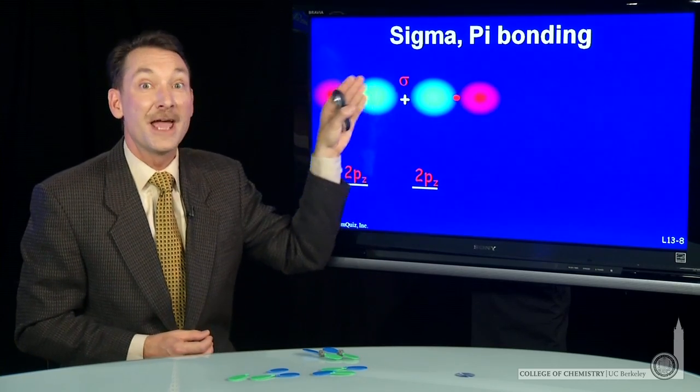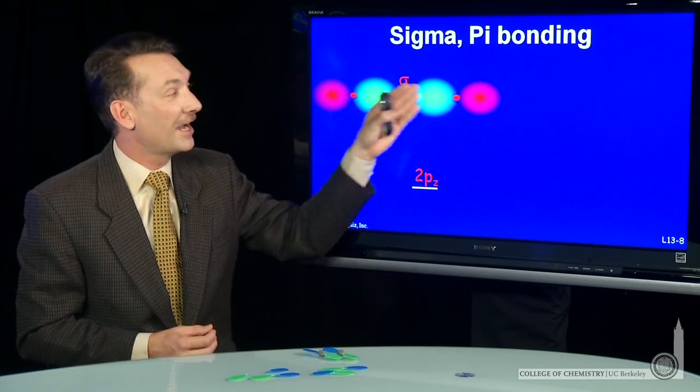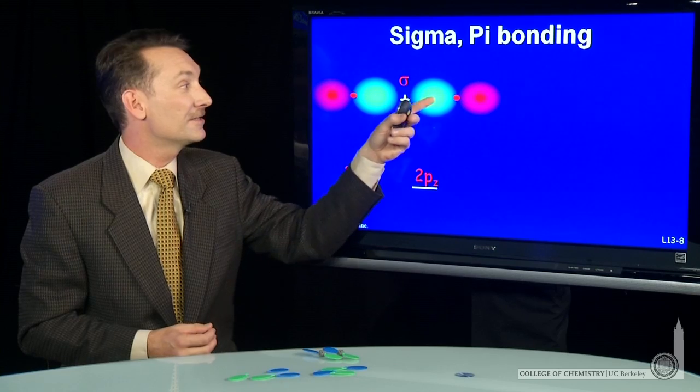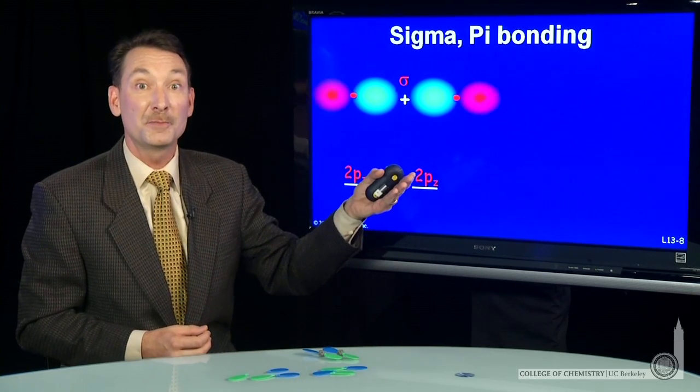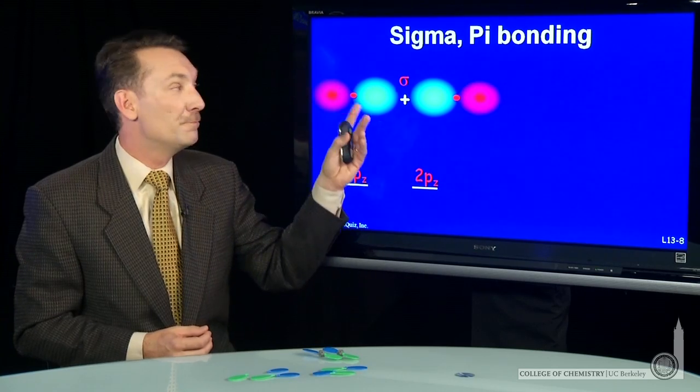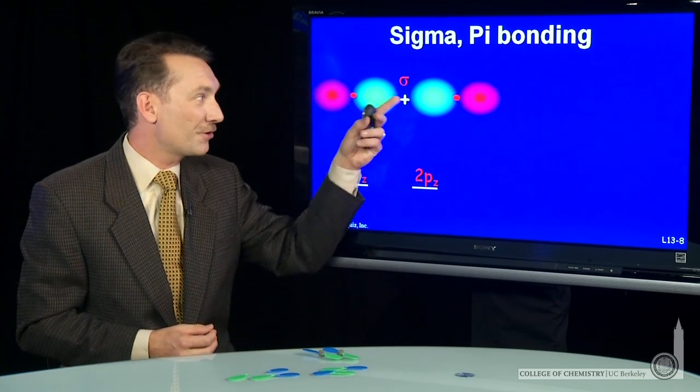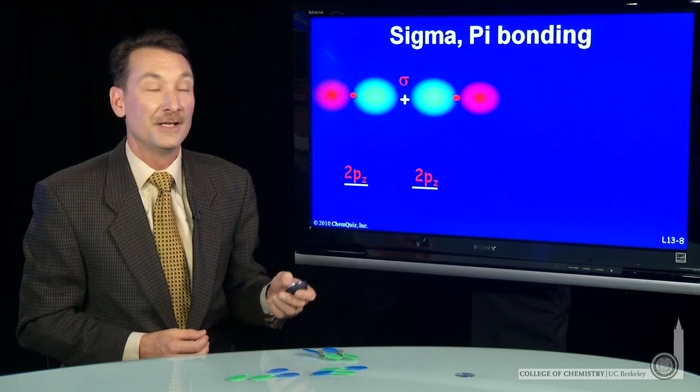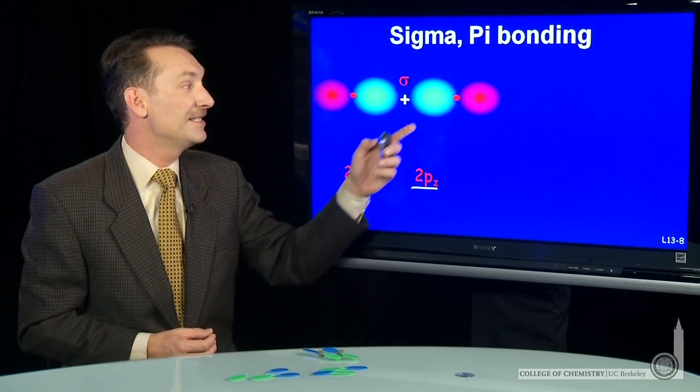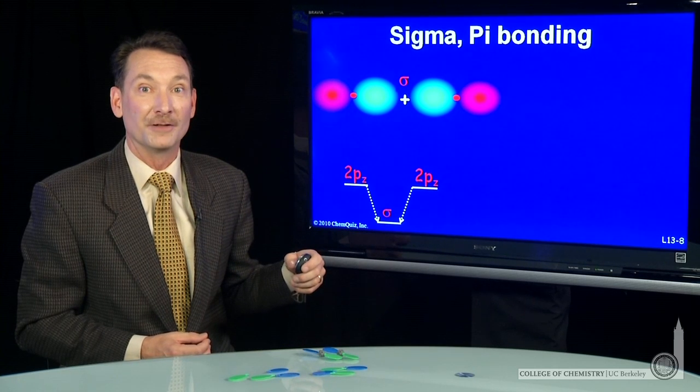I'm going to bring those two together and make that linear combination. I choose that linear combination because that gives me amplitude, a higher amplitude, a higher probability of finding electrons between the two nuclei. Constructive interference between the two nuclei leads to a bonding orbital. So pz and pz can combine to form a sigma bonding orbital.